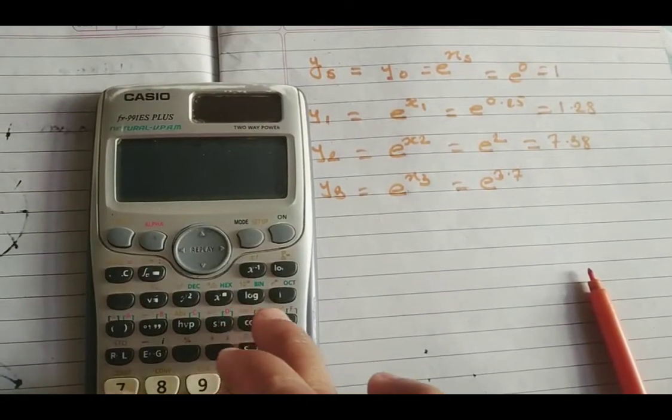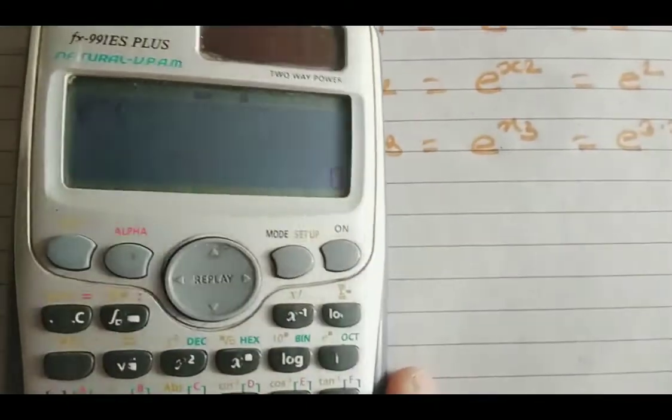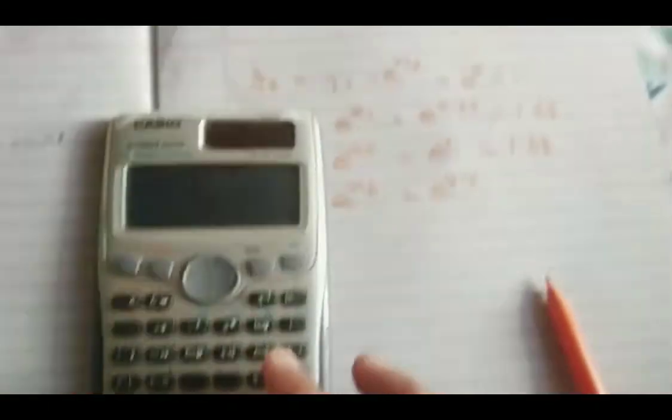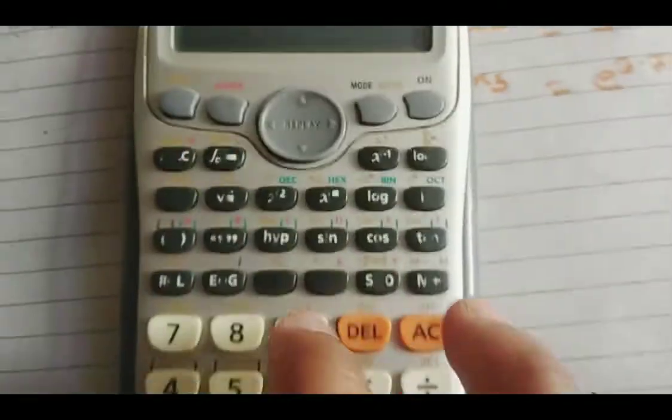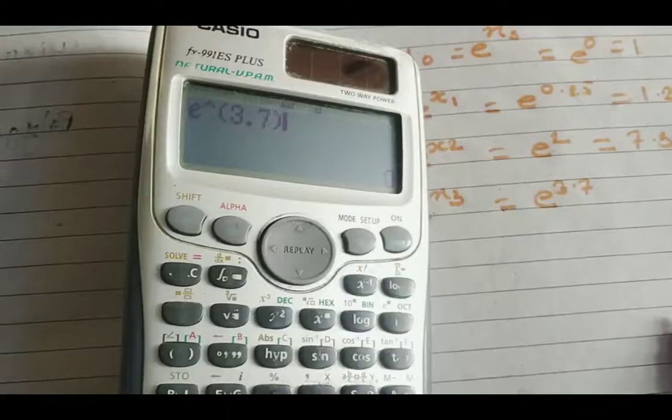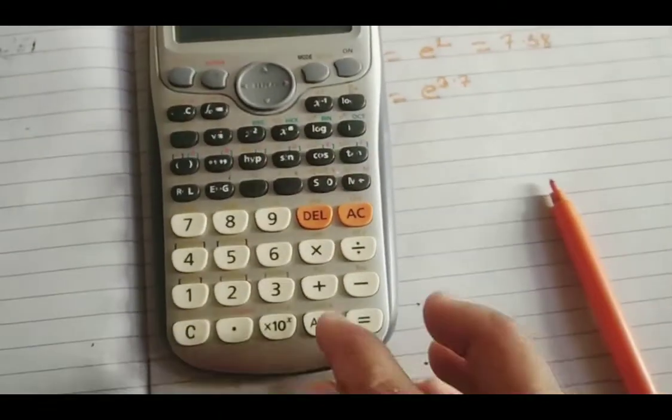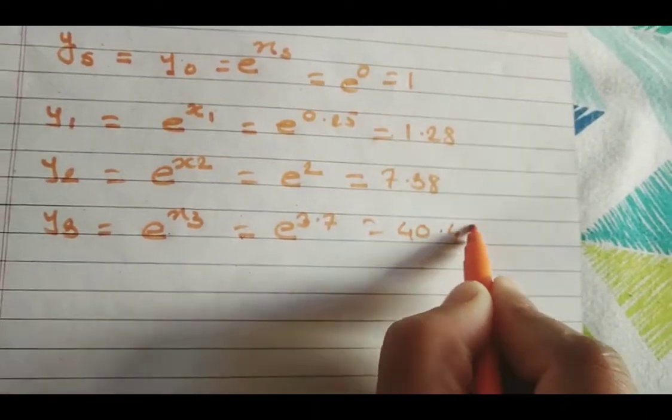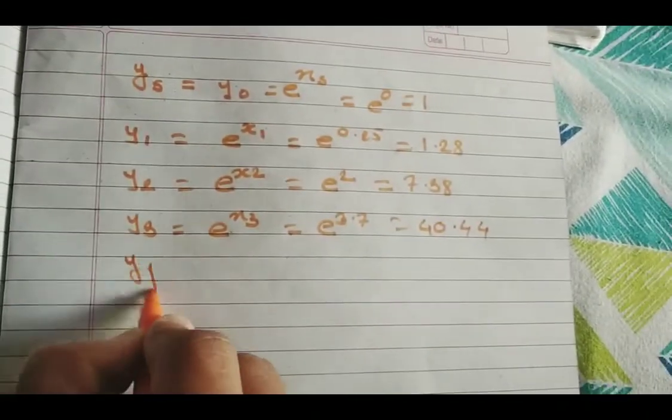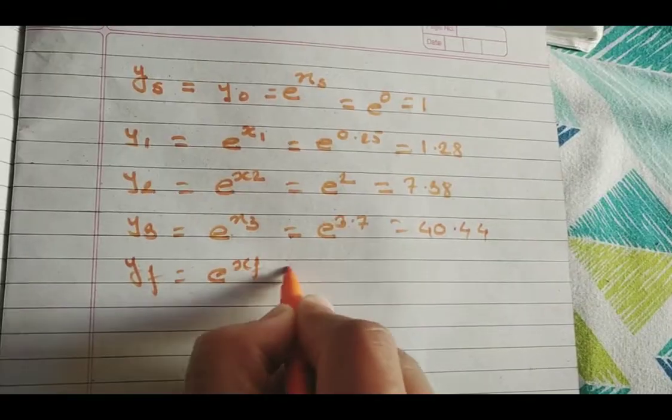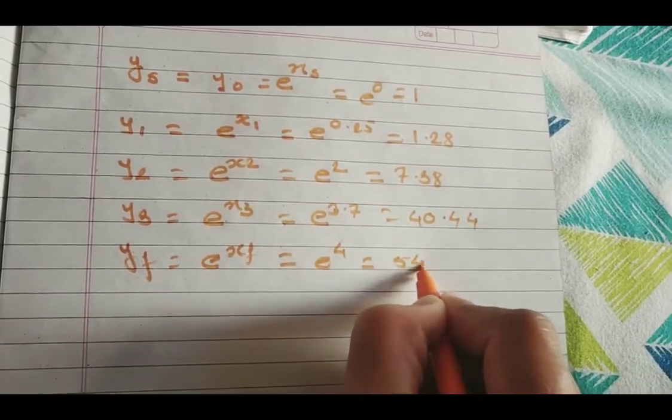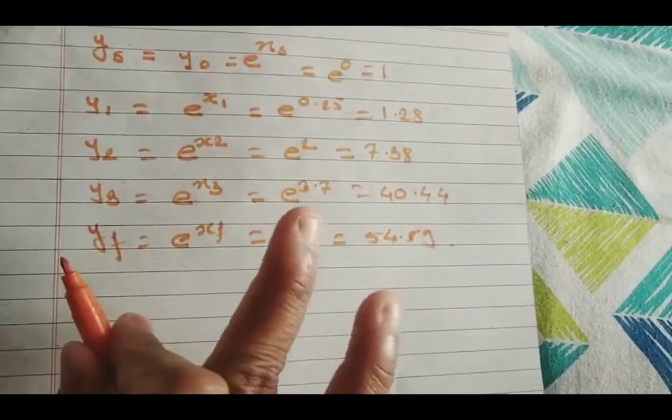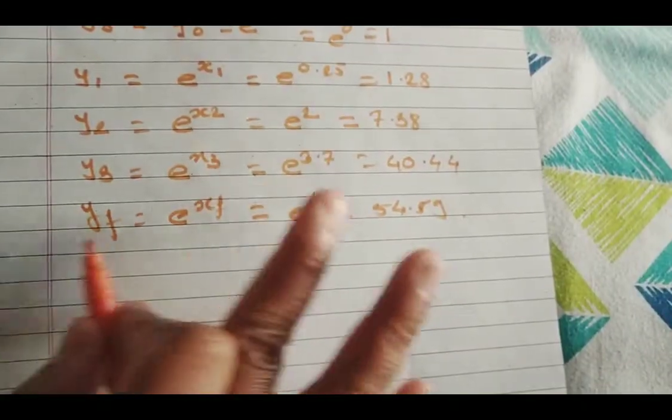Y3 = e^3.7. Using the calculator, e^3.7 = 40.44. Similarly, Yf = e^4 = 54.59. So here we complete one task calculating the Y values.